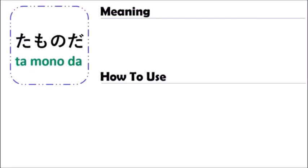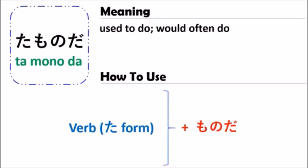The grammar of たものだ means 'used to do' or 'would often do.' In Japanese, when you use the grammar of たものだ, you should begin with the verb followed by ものだ.